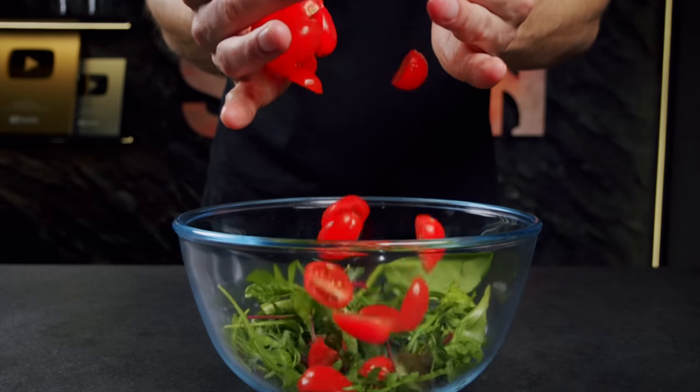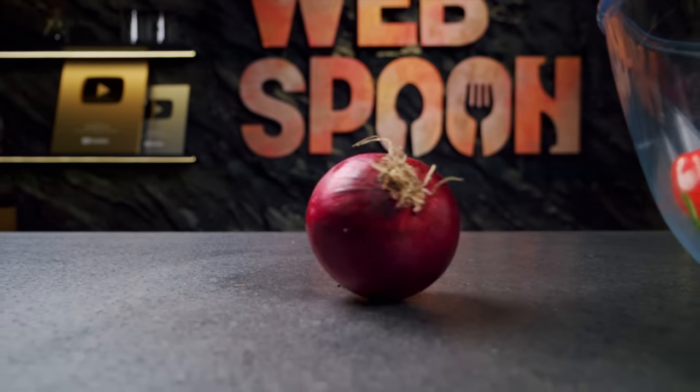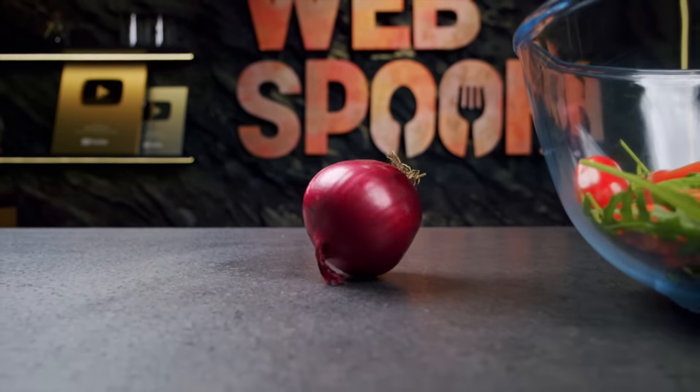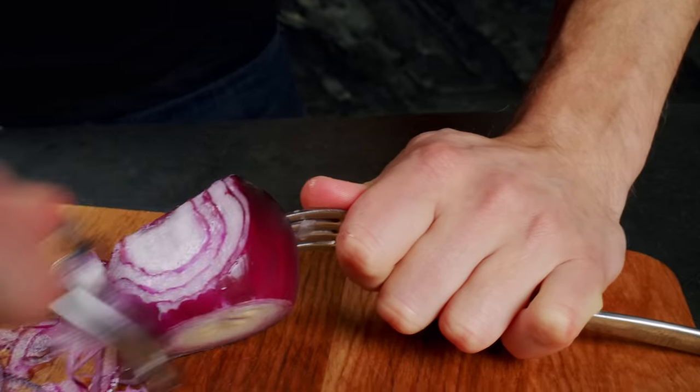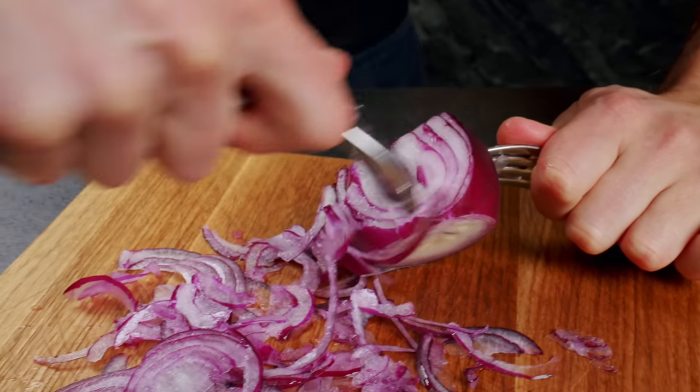Then add tomatoes to the salad. I also add onions to the salad. To cut it quickly, I stick a fork in it and cut it with a regular vegetable peeler.